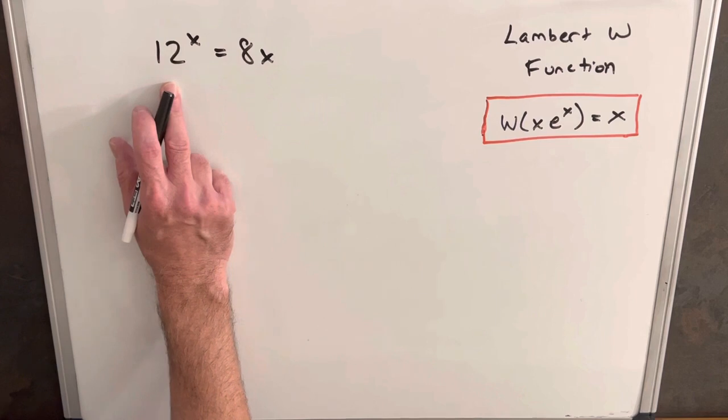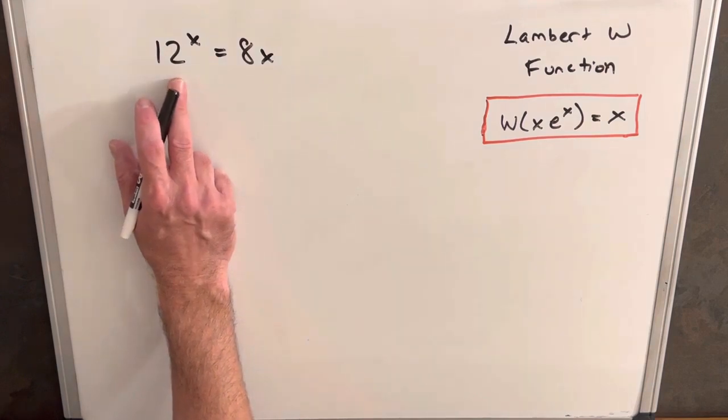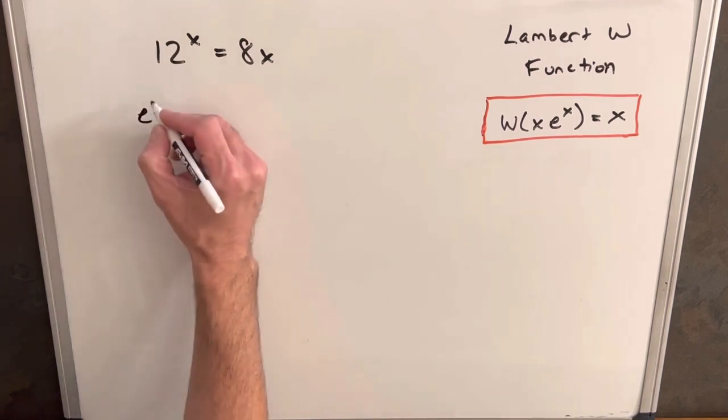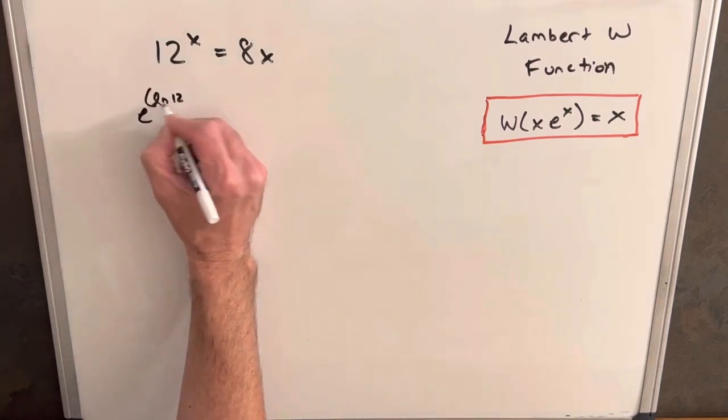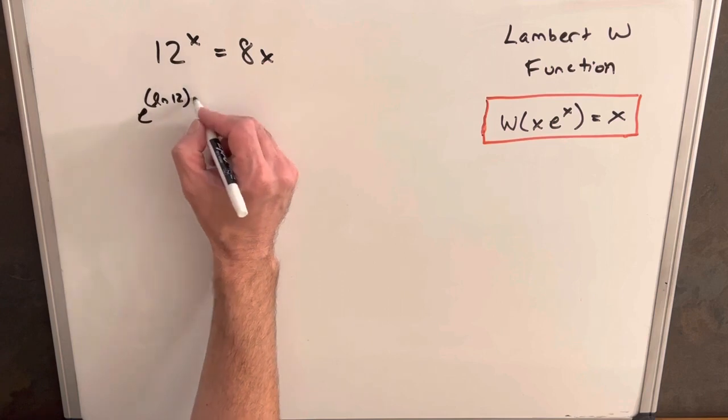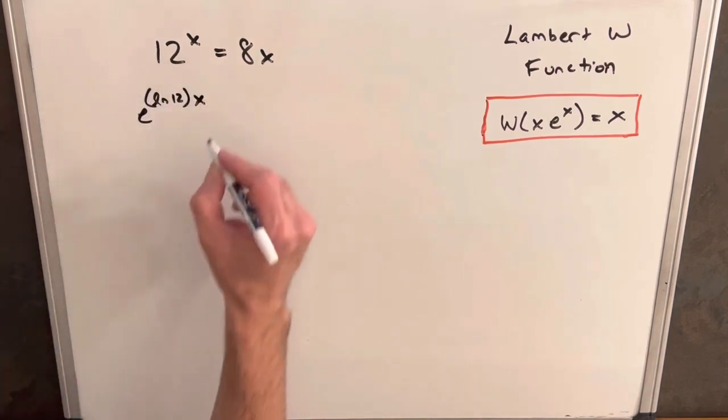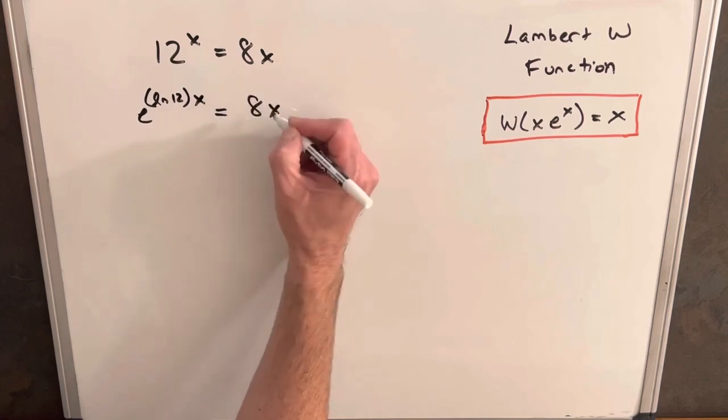So we don't necessarily like that we have base 12. We'd like this to be a base e. So I think to start with, let's just rewrite that as a base e. We can write this as e to the ln 12, and then we can just have our x here like this, and this is going to be equivalent to what we have up here in our problem. And this is going to be equal to 8x.